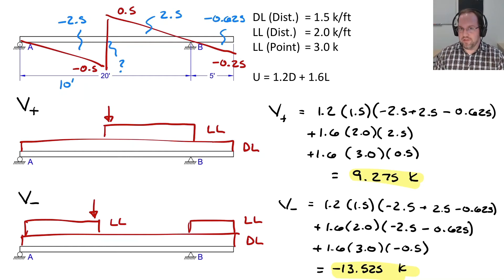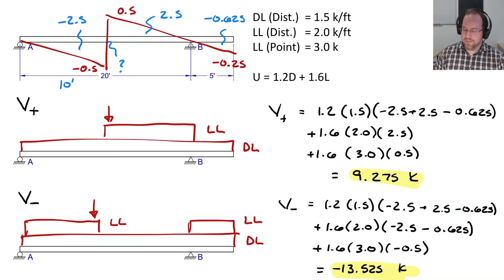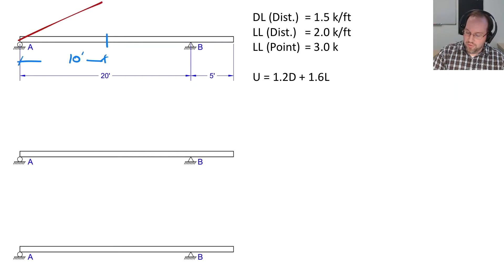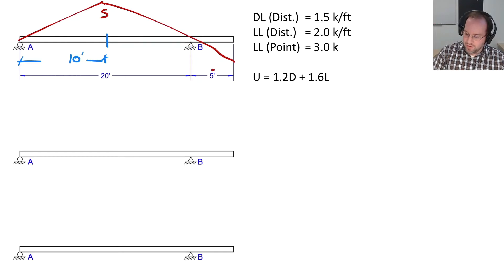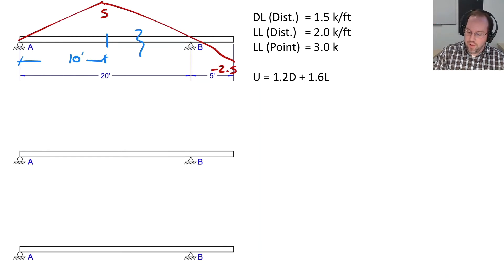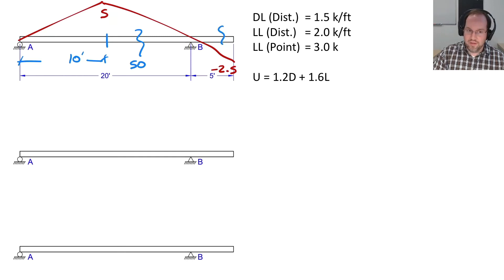Let's repeat the same process for moment. Looking at moment at mid-span, 10 feet in, the influence line has a peak of +5 and a negative value of −2.5. The area of the full positive triangle is 50, and the area in the negative cantilever region is −6.25.